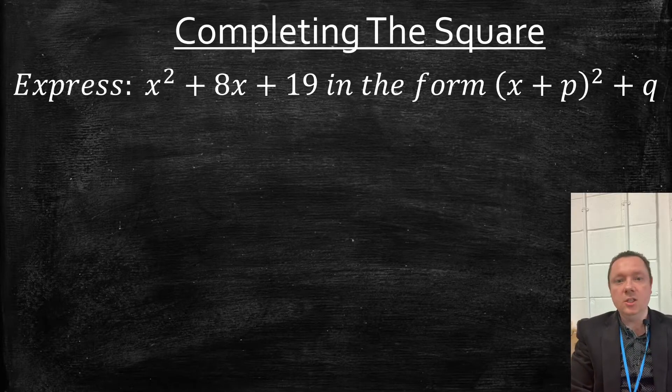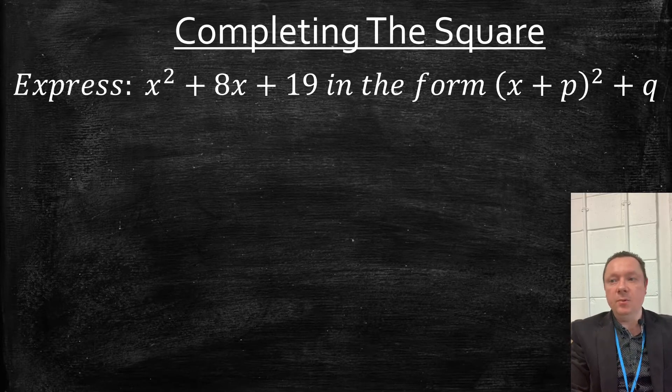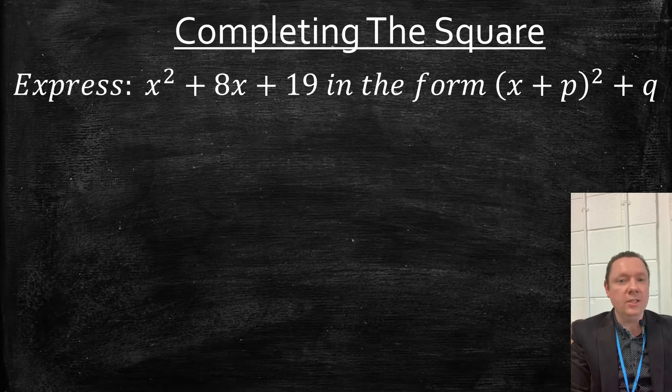Let's get started with completing the square. Express x squared plus 8x plus 19 in the form (x + p)² + q.